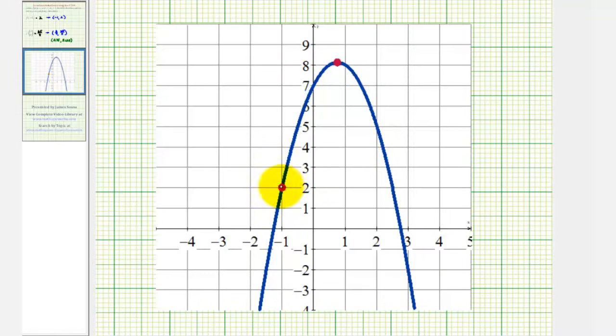Notice this point on the left has coordinates negative 1, 2. This is because we found that f of negative 1 was equal to positive 2.